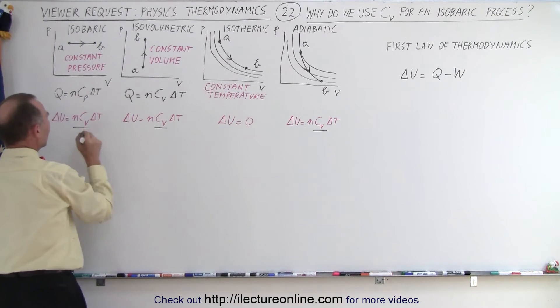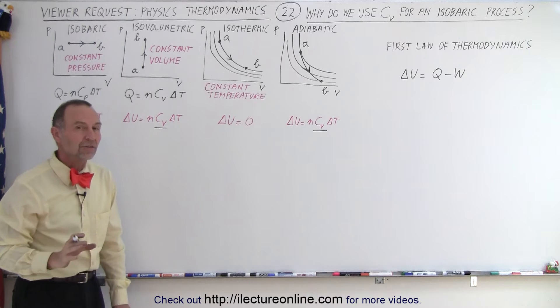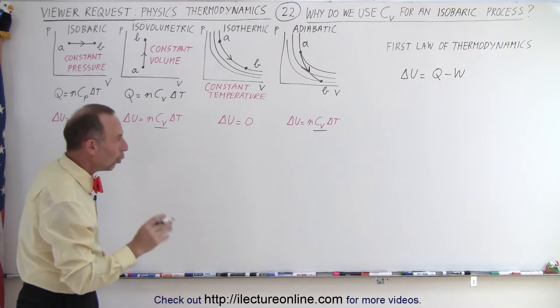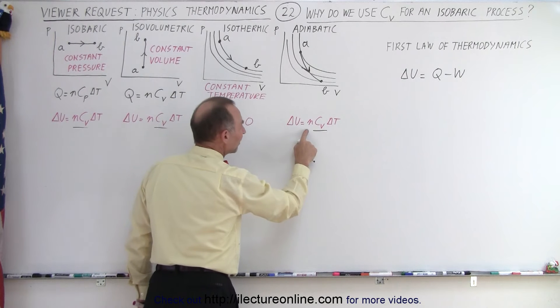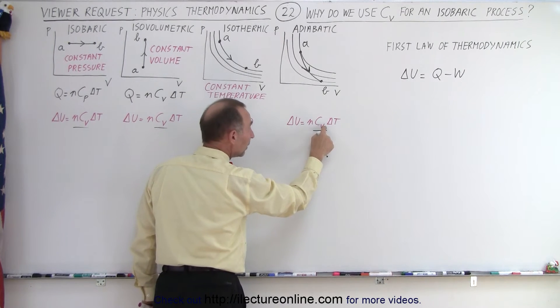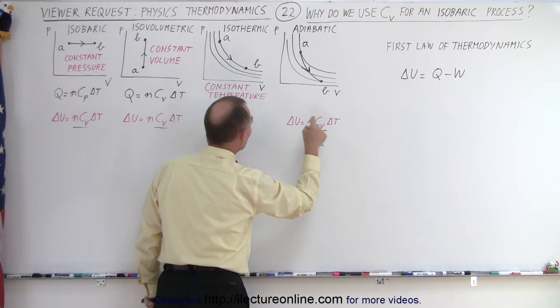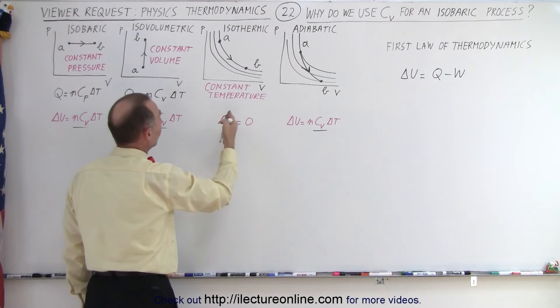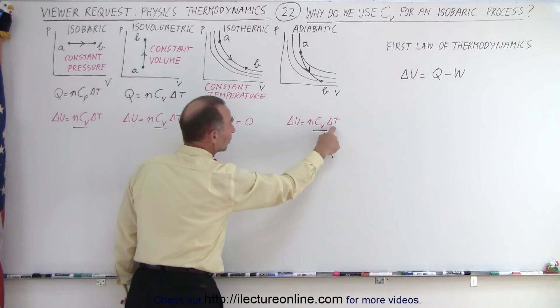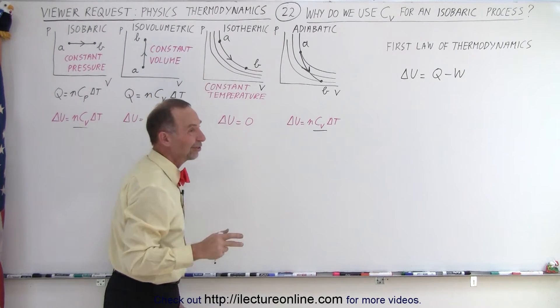C sub V, C sub V, no matter what process it is, the change in the internal energy is always the number of moles times the specific heat relative to the constant volume times delta T, no matter what process it is. And of course, for a constant temperature process, since delta T is equal to zero, delta U is equal to zero.